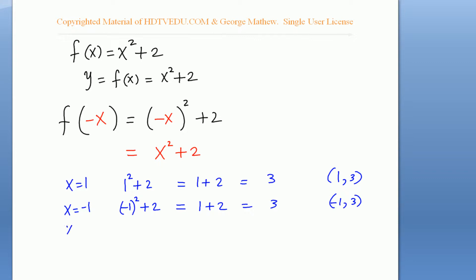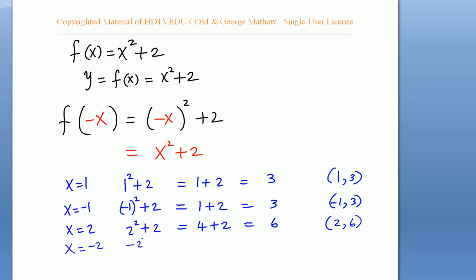When you put x equals 2: 2 to the power of 2 plus 2 gives 4 plus 2, which is 6. So the point is (2, 6). When you put x equals negative 2: negative 2 to the power of 2 plus 2 gives 4 plus 2, which is also 6. So negative 2 also has 6 as the output. This function is even.